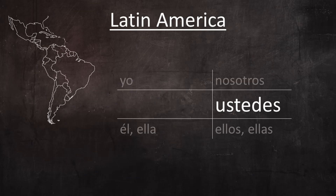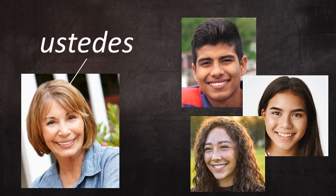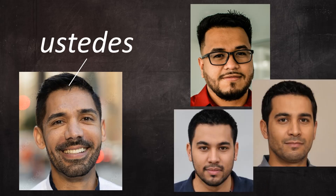In Latin America, just the opposite has happened in the second-person plural: vosotros has essentially died out, and ustedes serves as the only form. There's nowhere in Latin America where ustedes isn't the exclusive second-person plural form of address in ordinary communication. So, for example, an adult Mexican woman might address a single young person as tú but would address a group of young people as ustedes. A Peruvian man might address a close friend as tú but would address a group of close friends as ustedes — the same for any group in any circumstance, familiar or formal.